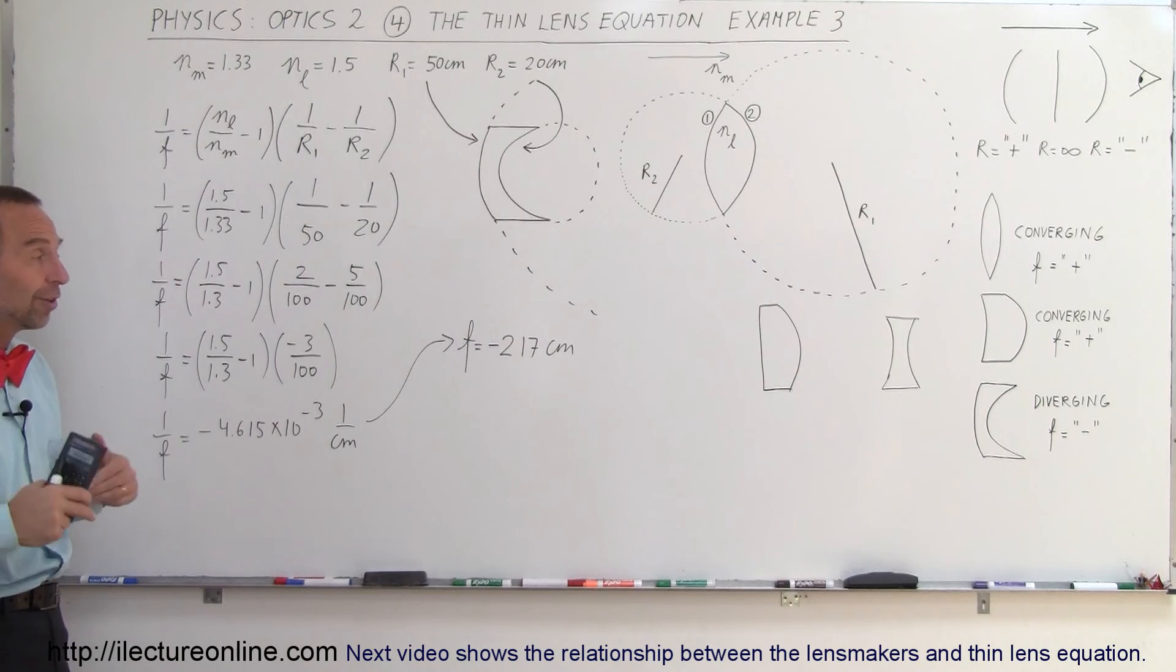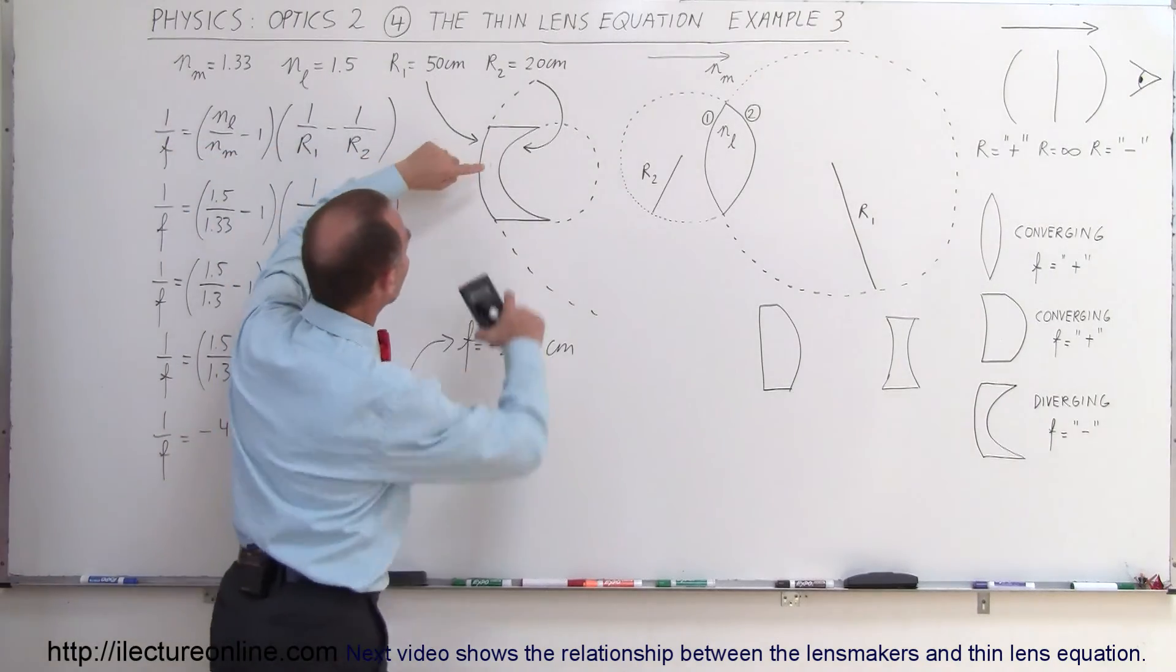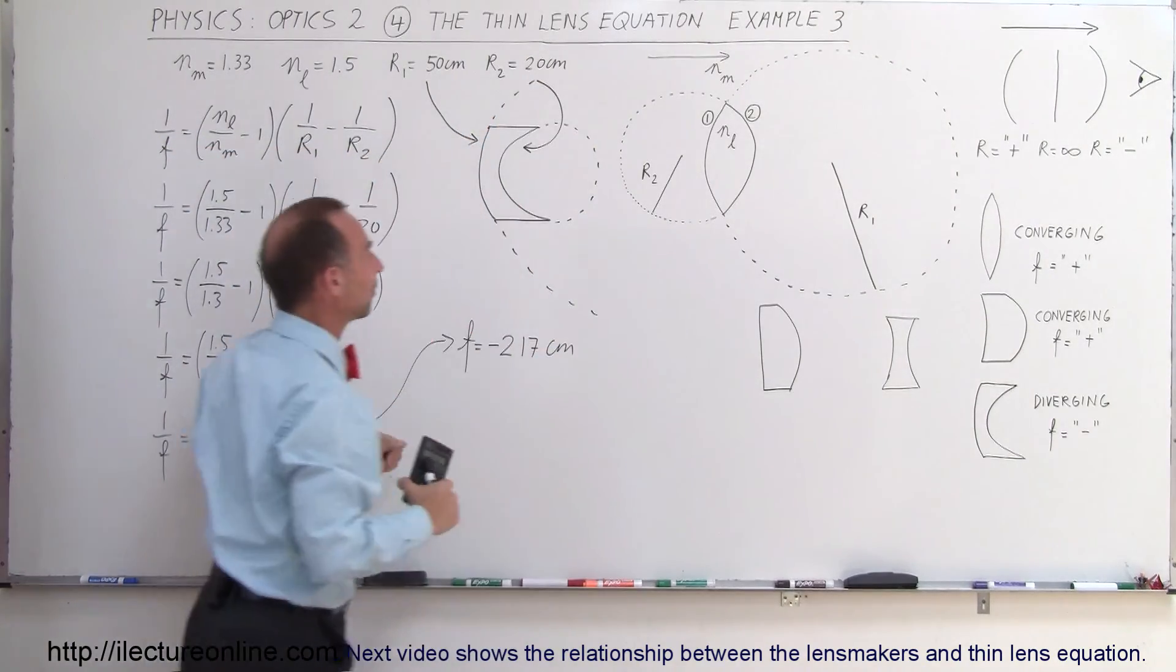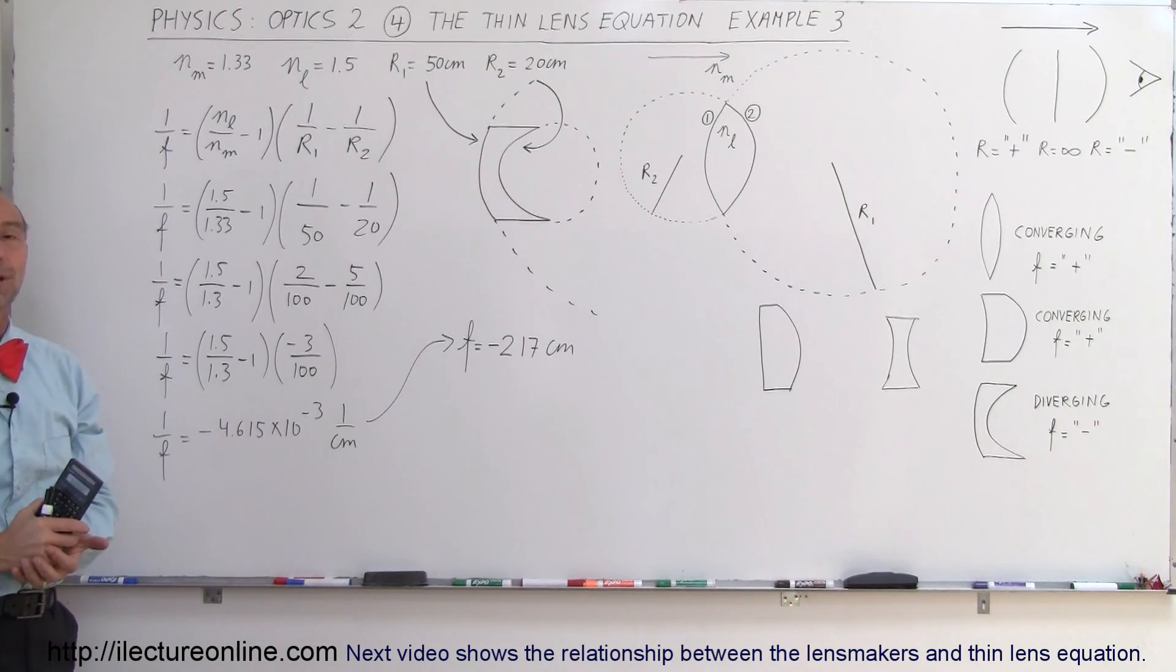Notice it has a very long focal length so it's not a very strong diverging lens but diverging nevertheless. In other words if rays go through the lens parallel they will diverge out away from the optical axis after they go through the lens. That's how you do that.